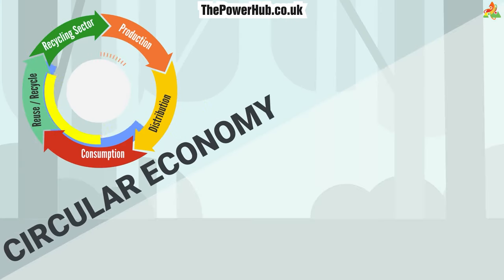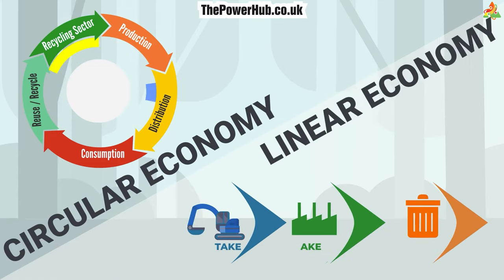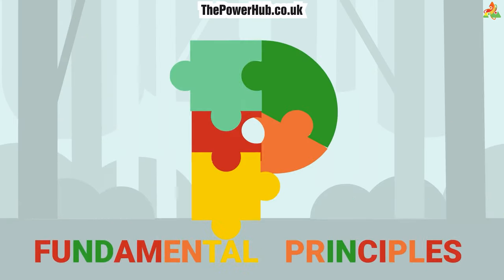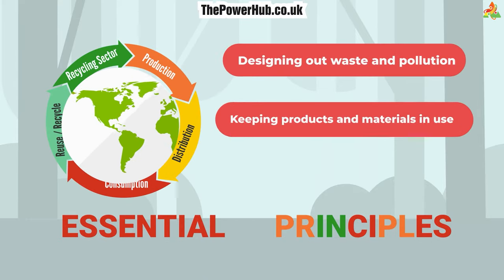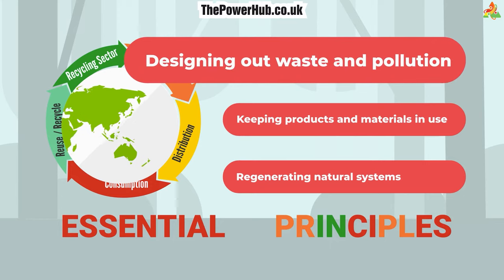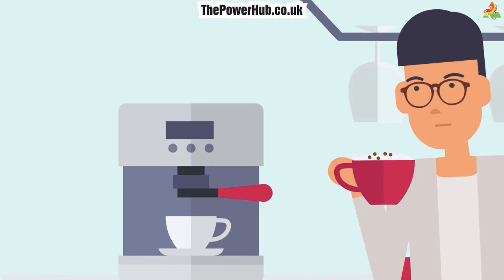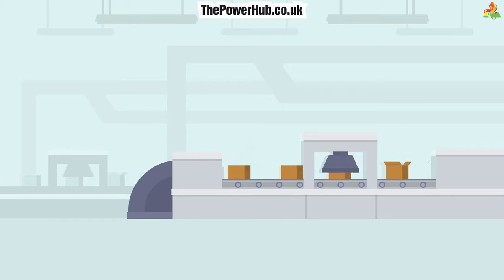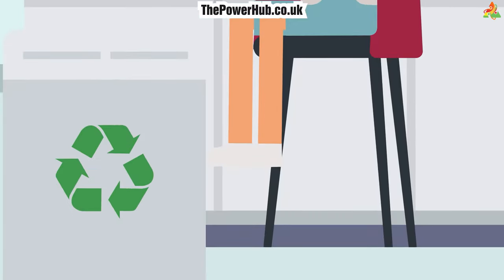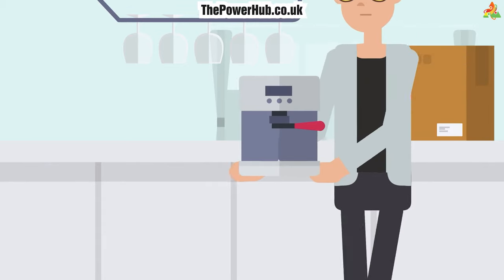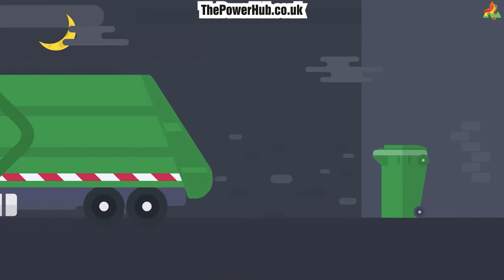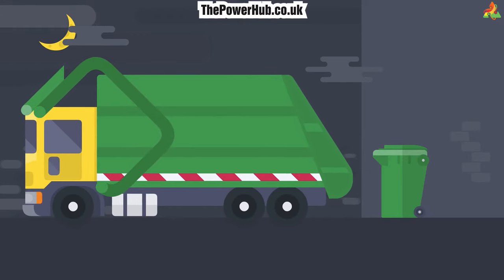How does the circular economy differ from traditional linear economic models, and what are its fundamental principles? The circular economy follows three essential principles. First, designing out waste and pollution. In the circular economy, products are designed to be durable, repairable, and recyclable. By prioritizing longevity and resource efficiency, waste and pollution are minimized throughout the product's life cycle.